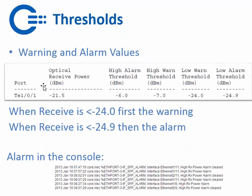There are also thresholds. Thresholds have warning and alarm values. In this case, when the receiving power exceeds 24 dBm, you will get a warning; if it exceeds 24.9 dBm, you will get an alarm, and all of this can be seen in the console. The thresholds are always stored on the EEPROM itself, with an exception of the Cisco 4500 series and the 4900 series, where the thresholds are inside the IOS itself.